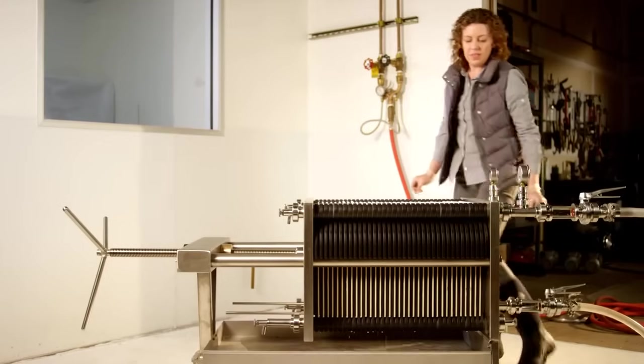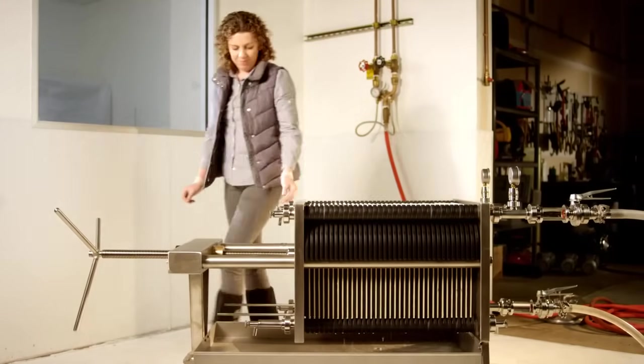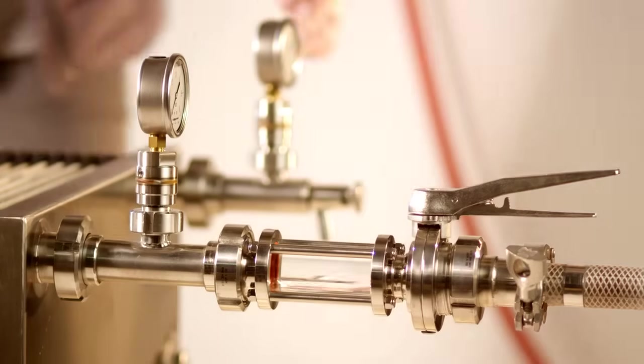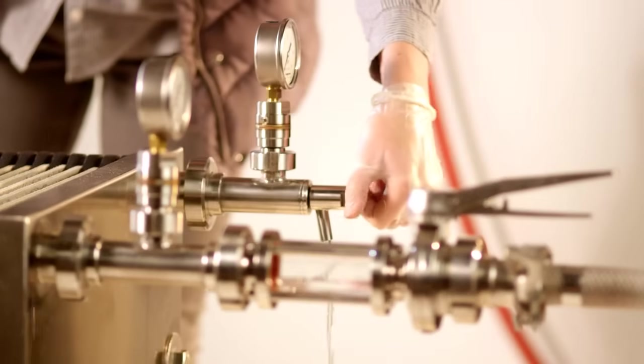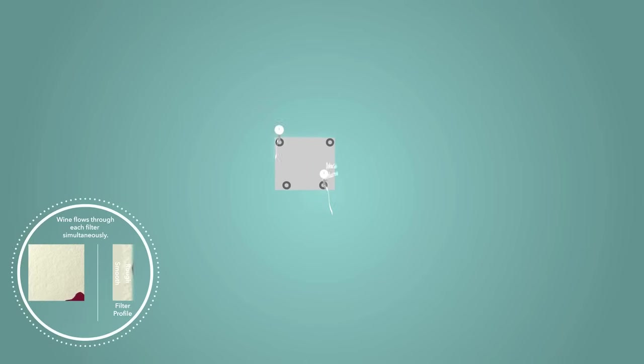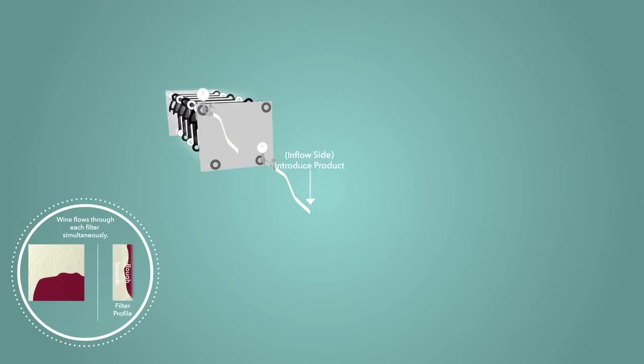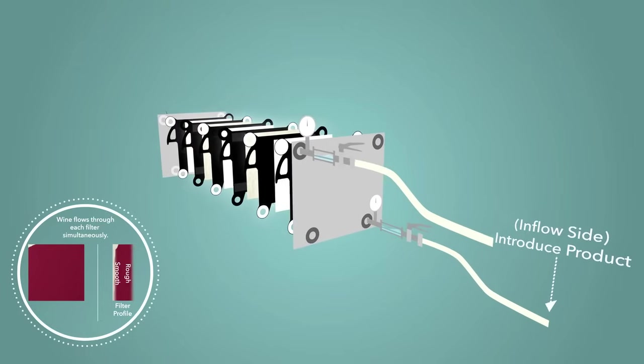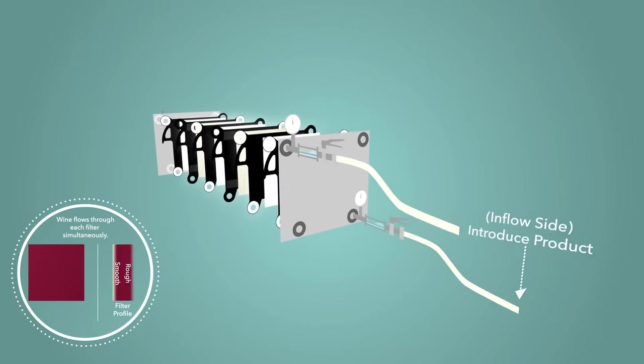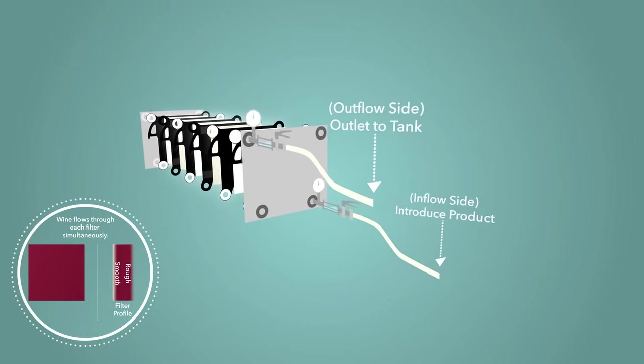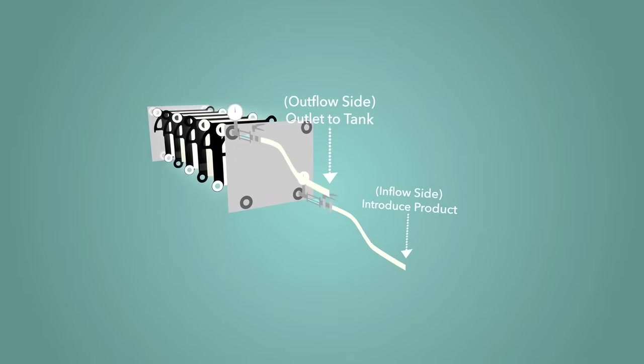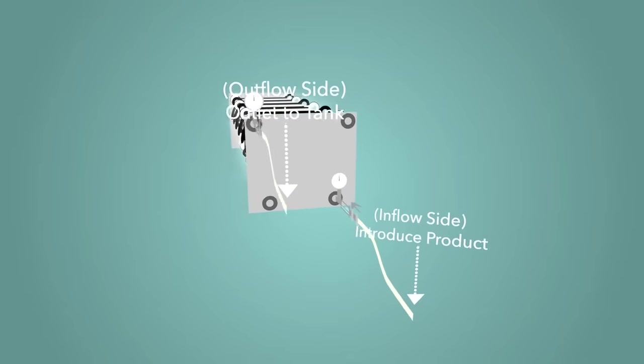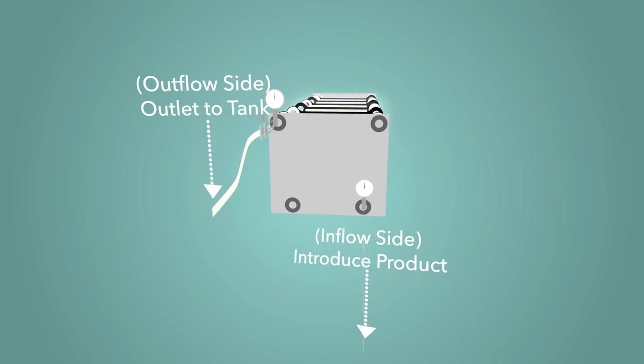Close all valves and attach product lines. Open a vent valve on the inlet side of the filter. Slowly introduce product. Product will discharge from vent when inlet side is full. At that point, close the drain and open outlet to destination tank. Common initial differential pressure will begin at 5 to 8 psi or roughly 0.5 bar.